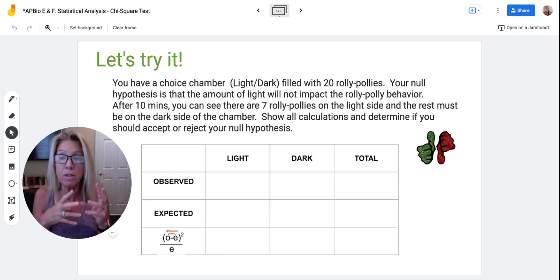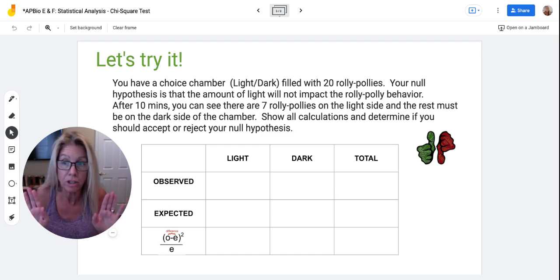Your independent variable in this case, which is the degree of light, whether it's light or dark, and your dependent variable, which would be how many roly-polies are on either side. So your null hypothesis says there's no connection.